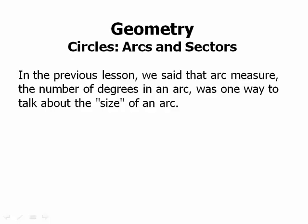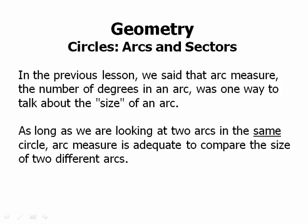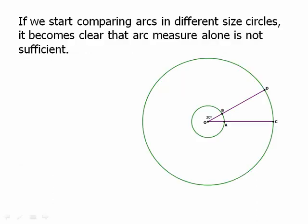Arcs and sectors. In the previous lesson, we said that arc measure was one way to talk about the size of an arc — the number of degrees that an arc has. That's one way we can say how big an arc is. As long as we're looking at two arcs in the same circle, arc measure is perfectly adequate to compare the size of two different arcs. But if we start comparing arcs in different size circles, it becomes clear that arc measure alone is not sufficient.